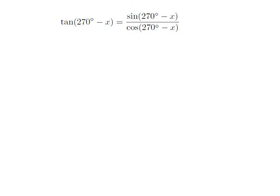As we know, tangent of theta is equal to sine of theta divided by cosine of theta. So, tangent of 270 degrees minus x is equal to sine of 270 degrees minus x divided by cosine of 270 degrees minus x.